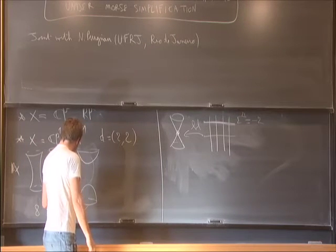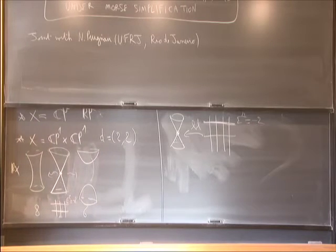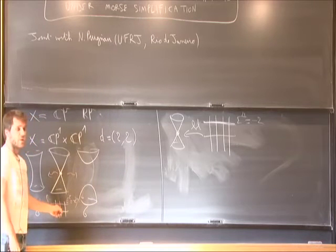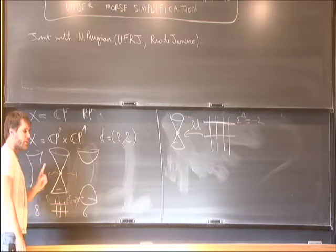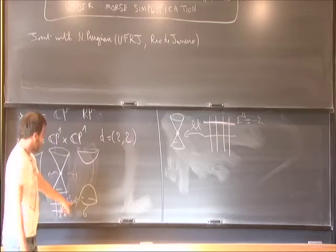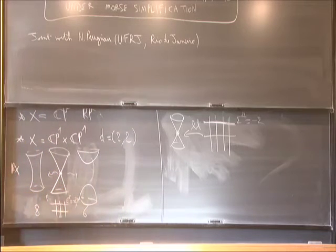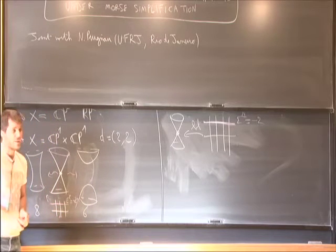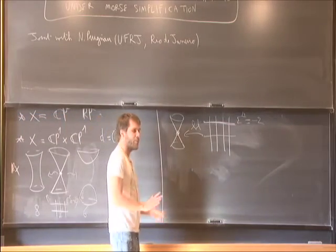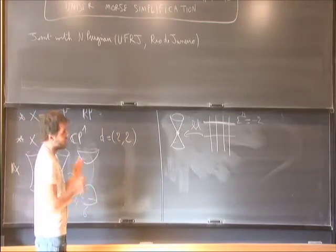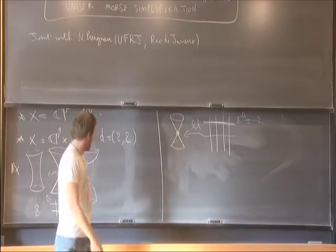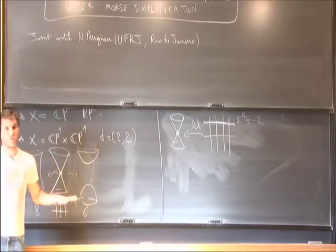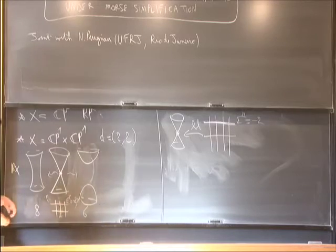Here's the blown-up surface. So the first idea is to contract here and then to go back. But we have to be careful that the presence of this curve of self-intersection minus 2 makes the whole complex structure non-generic, and so you have to be careful with enumeration of curves. For example, staying on the real setting, if you do this game on this surface, you will not get something which is invariant — that's very easy to see.